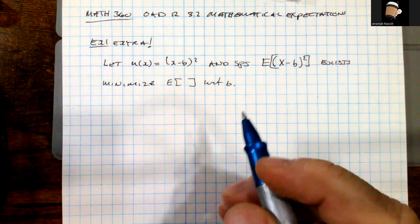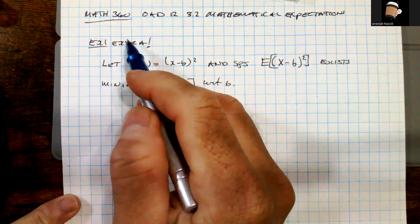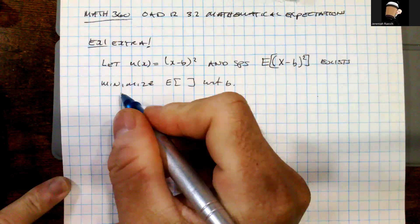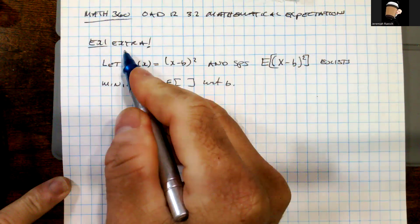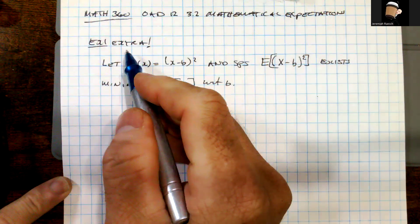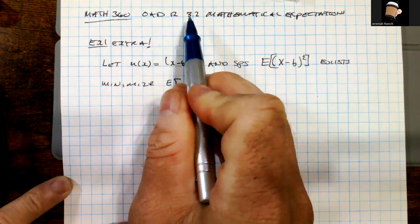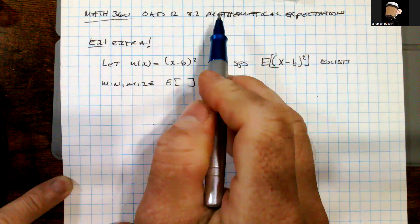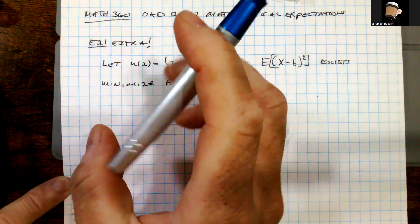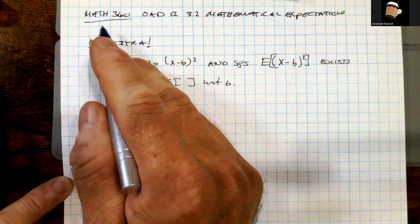Welcome. This is a supplemental piece with several extra examples. This is for Day 12, Section 3.2. We're looking at mathematical expectation in this part of our discoveries for Math 360.